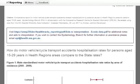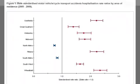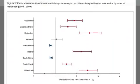Figure 1 shows motor vehicle and motorcycle accident hospitalisation standardised rate ratios for each region compared to the state rate for males, and Figure 2 contains the same information for females. It's clear that the country health service regions have significantly higher rates compared to the state, while the metropolitan regions are significantly lower.